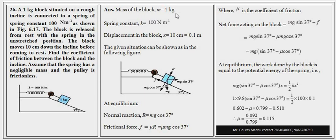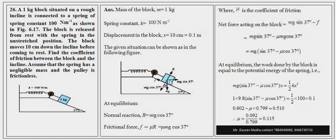When the block moves down, the surface exerts a normal reaction because the block presses the surface with mg cosθ. Since action equals reaction, the surface also exerts a normal force of mg cosθ back on the block.